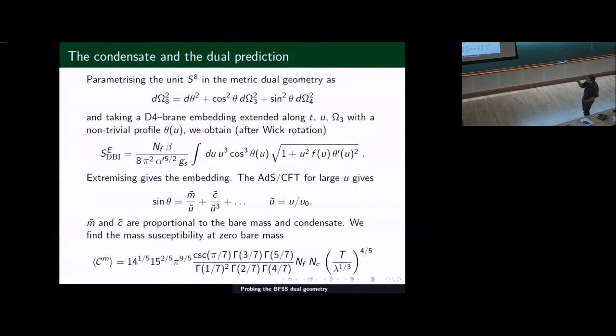If one parameterizes the DBI action by the embedding, one gets an effective action for theta, the embedding coordinates. Expanding around U goes to infinity, one can extract the effective mass, the renormalized mass, and the condensate. These ones are proportional to the bare mass and the condensate. We can analyze the derivative of C with respect to M analytically. We can find the solution numerically, but we can find the derivative analytically. It's a nice T to the five over four over five scaling in it as well.